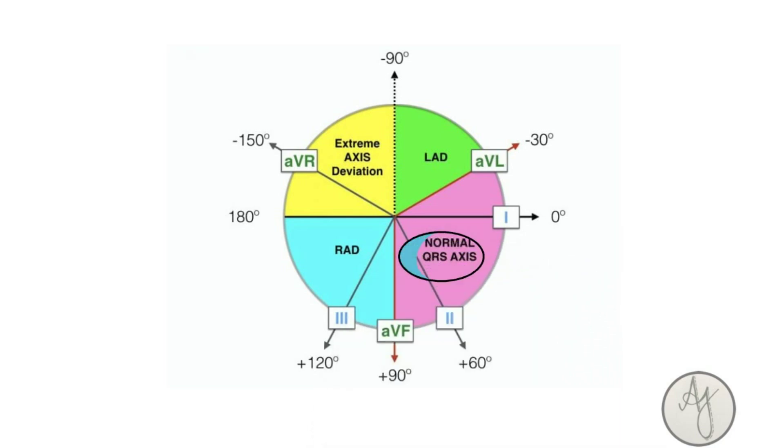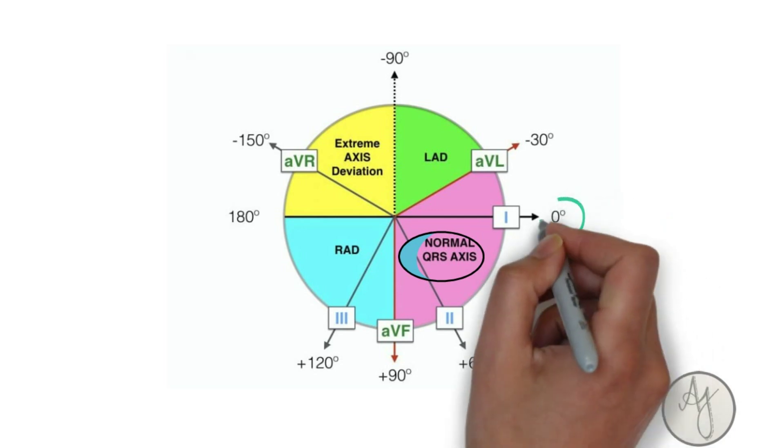So a normal axis is ideally anything between 0 to 90 degrees, but minus 30 to 90 is also considered somewhat normal. So most books will say minus 30 to 90. So if the axis is at 0 degrees, it's also called a horizontal heart.